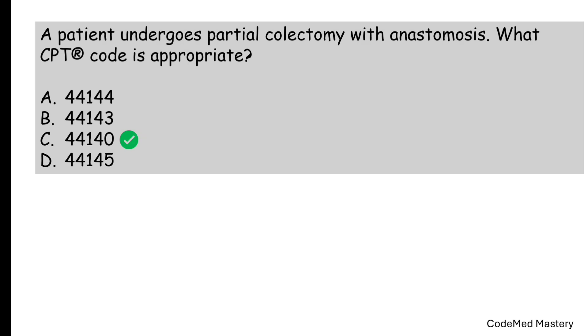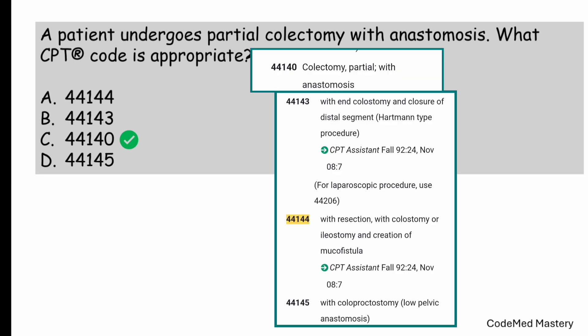The right answer is option C, 44140. Let us read the question: a patient undergoes partial colectomy with anastomosis — what CPT code is appropriate? Let us check the options. The code in option A, 44144, is for colectomy partial with resection with colostomy or ileostomy and creation of mucofistula. The question has not mentioned colostomy, ileostomy, or creation of mucofistula, so we eliminate option A. Option B, 44143, is for colectomy partial with end colostomy and closure of distal segment, Hartmann type procedure — that is also not matching. The code in option C, 44140, is for colectomy partial with anastomosis, which is exactly what is mentioned in the question. Therefore the right answer is option C.